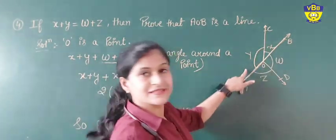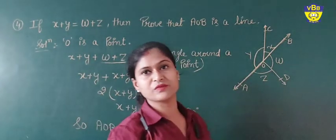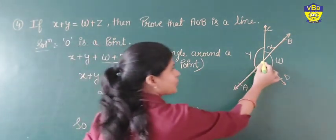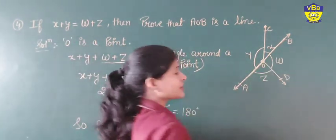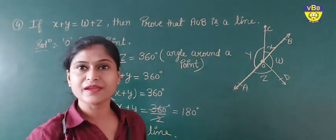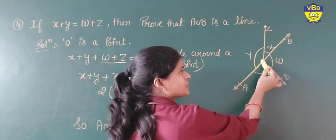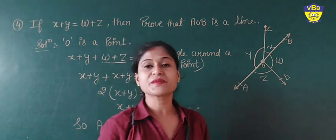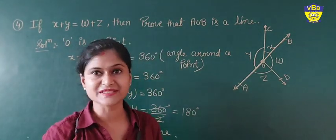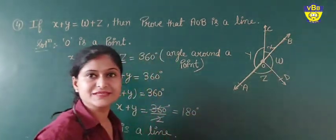One of the pair: x plus y is equal to 180 degrees, or you can prove w plus z should be equal to 180 degrees. So let's start. We can write, because O is a point, x plus y plus z plus w — a point makes a 360 degree angle, that is called a complete angle. So the sum of all four angles will be 360 degrees.